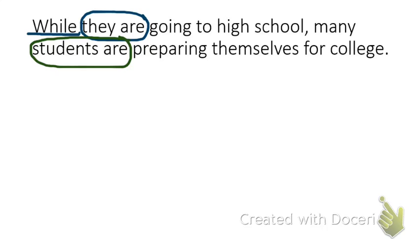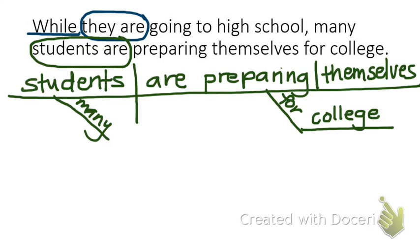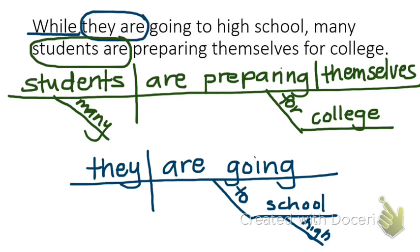We will begin diagramming this by diagramming the main independent clause first. Now we will diagram the dependent clause. Finally, it's time to connect our two clauses. Because we have a subordinating conjunction, we are going to go verb to verb with a diagonal dotted line, and then the subordinating conjunction gets written on that line. Notice that we capitalized it to indicate that it is the first word of the sentence. So if we were to rewrite the sentence, we know that we need to begin with the dependent clause.